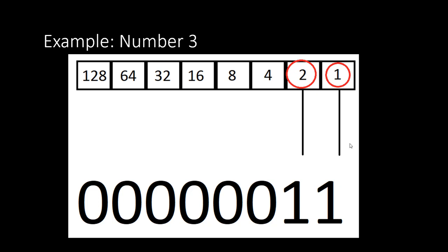Let's say we want to represent the number 3 in Bitwise Operators. We find the values that add up to 3 — that's 2 and 1, because 2 plus 1 is 3. Since those numbers add up to 3, we select those bits and set them to 1. All other values that don't make up 3 are set to 0. So the number 3 in binary is represented as 0, 0, 0, 0, 0, 0, 1, 1.